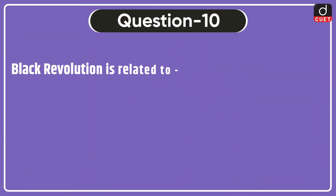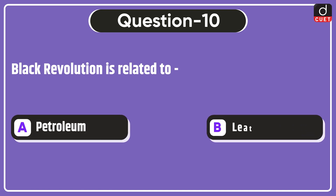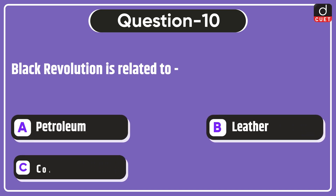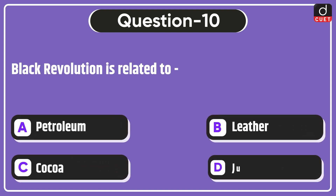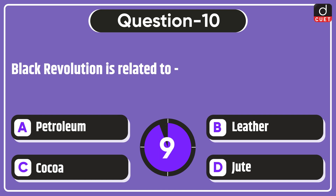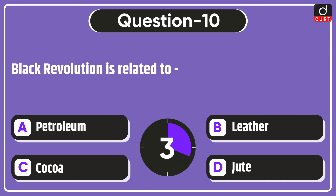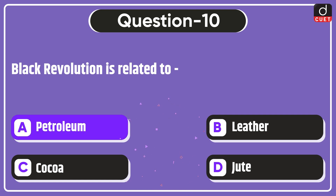Last question: Black Revolution is related to petroleum, leather, cocoa, or jute? The correct answer is option A — petroleum.